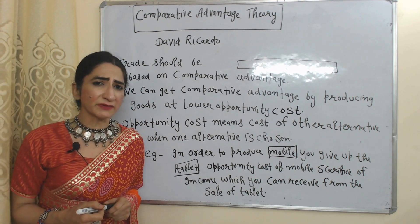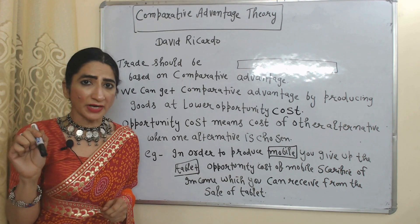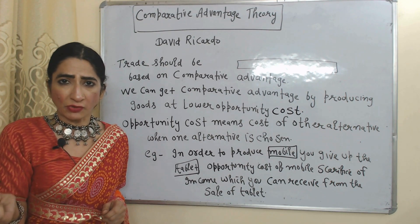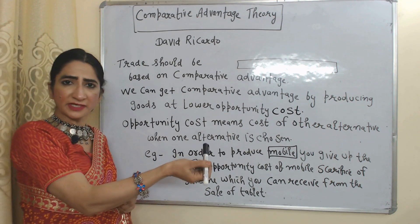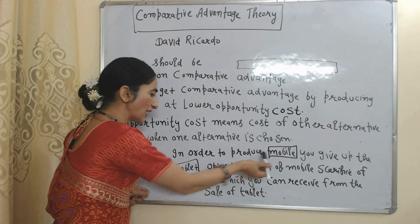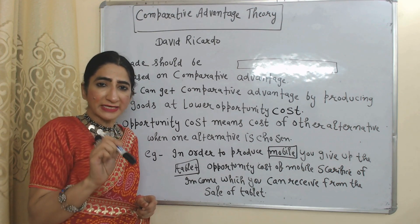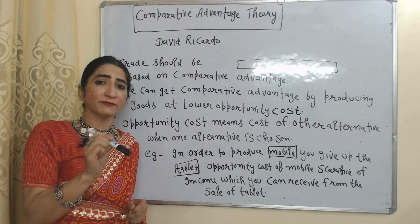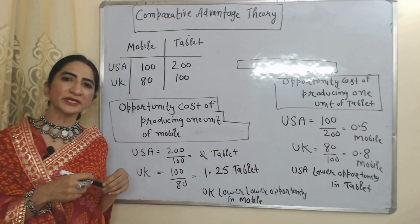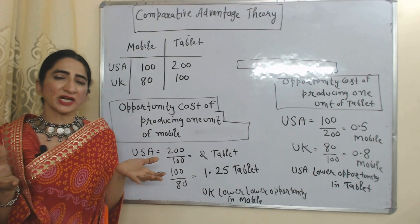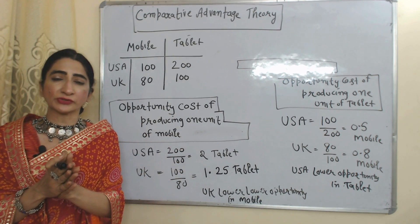Now we will see comparative advantage theory, given by David Ricardo. According to this theory, trade should be based on comparative advantage, and we can receive comparative advantage by producing goods at lower opportunity cost. Opportunity cost means the loss of other alternatives when one alternative is chosen. For example, with limited resources you can either produce mobile or tablet. If you choose to produce mobile, the opportunity cost is the income you sacrifice from not producing tablets. According to this theory, a country should increase production and export of goods in which they have lower opportunity cost, but reduce production and increase import of goods in which they have higher opportunity cost.